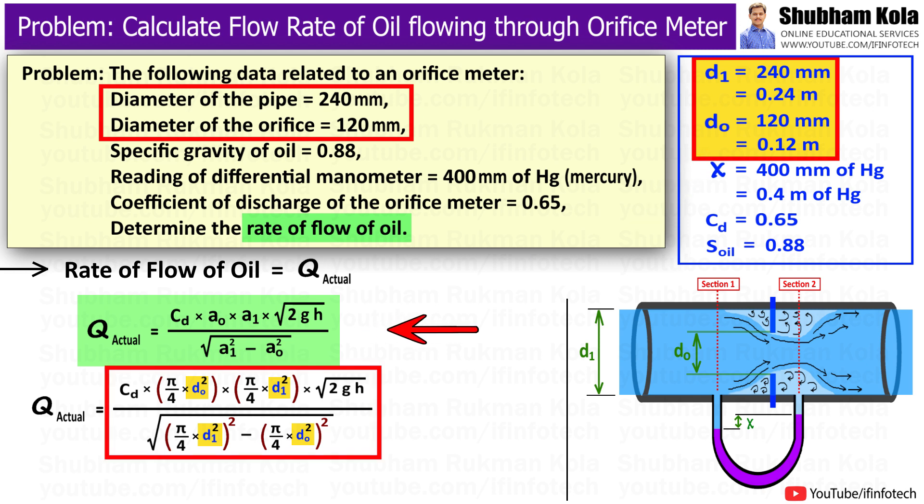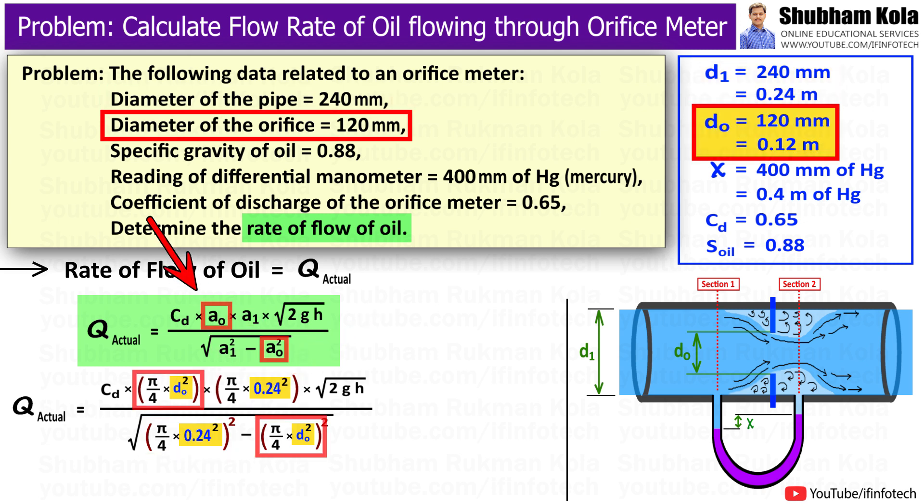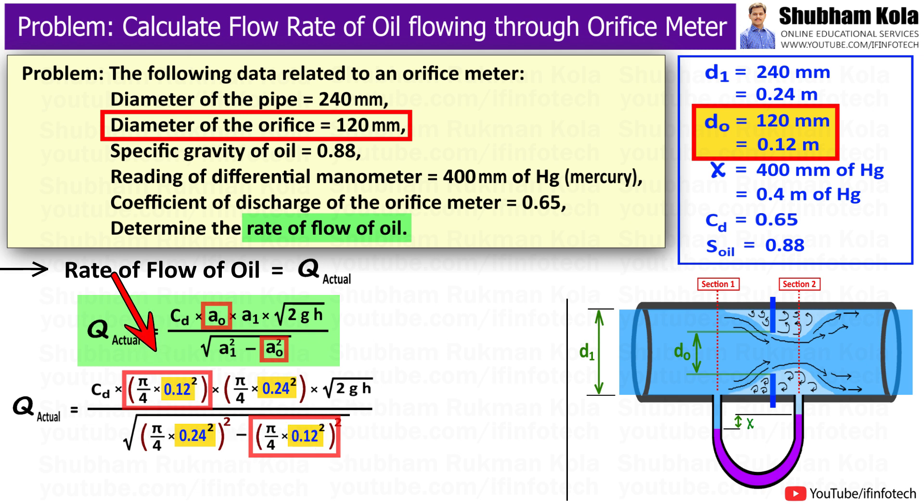Hence, in the discharge formula, A1 will be π/4 × d1² i.e. 0.24 squared, and A0 will be π/4 × d0² i.e. 0.12 squared.